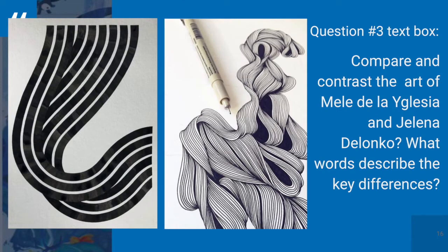Question number three in the text box: compare and contrast the art of Mele de la Iglesia and Jelena de Lanco. What words describe the key differences between these two styles and these two artworks that you see here? They're both curved lines, but curved lines and organic lines are not necessarily always the same. If organic line is something that might more be found in nature, then how is possibly the work of Jelena de Lanco actually geometric? Take some time to think about this.